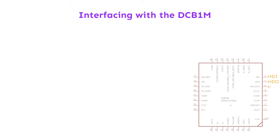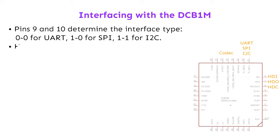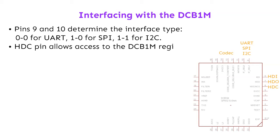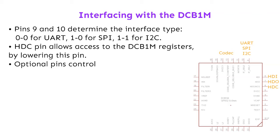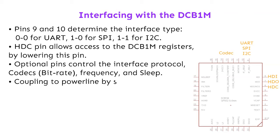Interfacing with the DCB1M: pins 9 and 10 determine the interface type — 0-0 for UART, 1-0 for SPI, 1-1 for I2C. The HDC pin allows access to the DCB1M registers by lowering this pin. Optional pins control the interface protocol, codecs, bit rate, frequency, and sleep. Coupling to the powerline is done by simple capacitor and protection diodes.